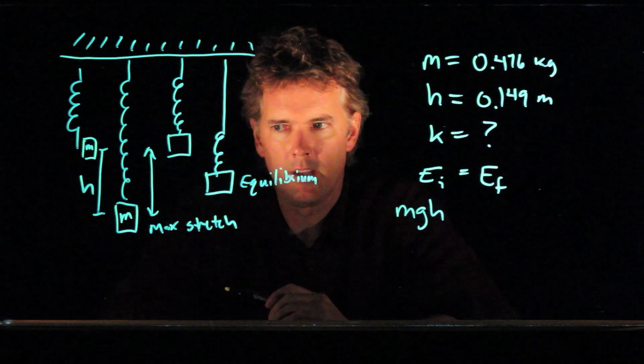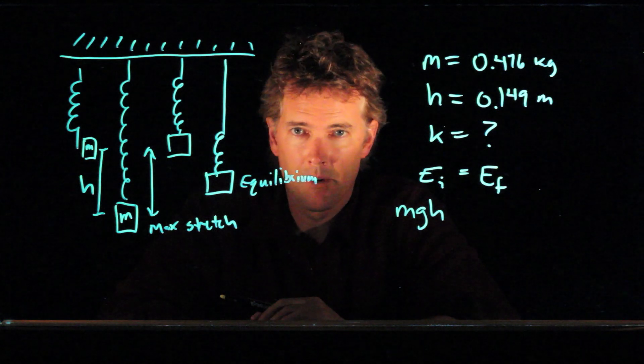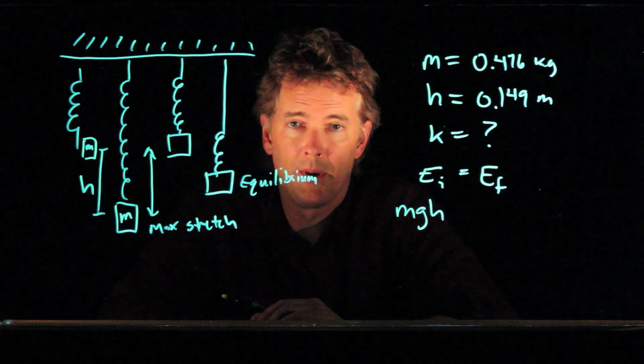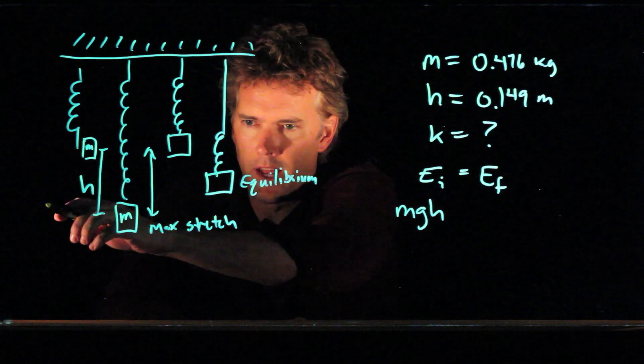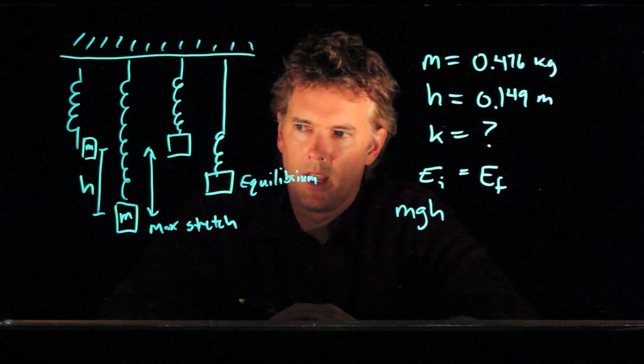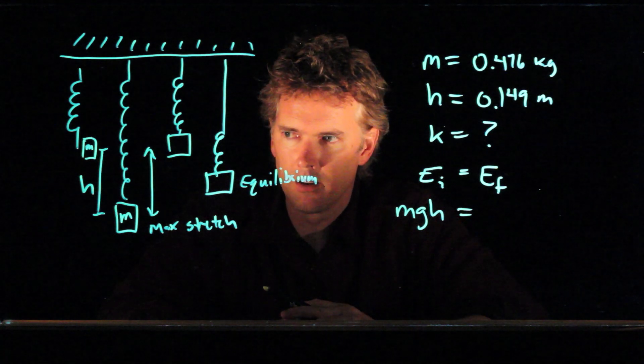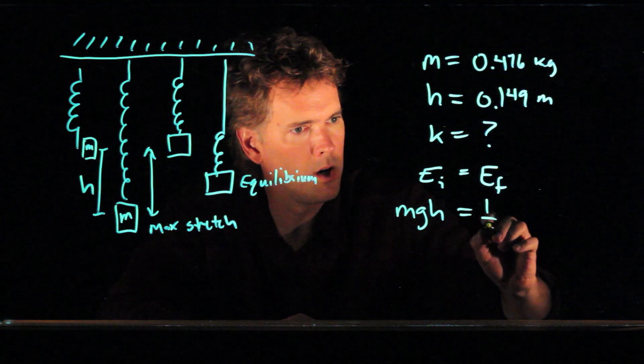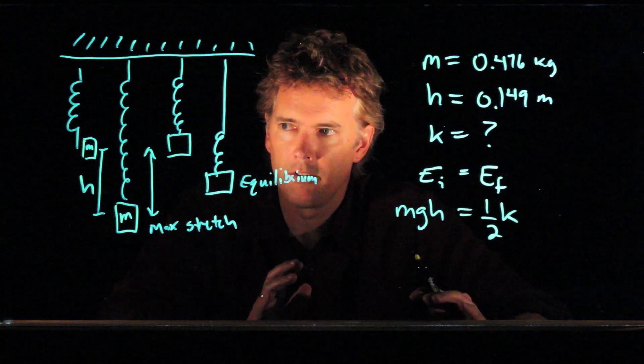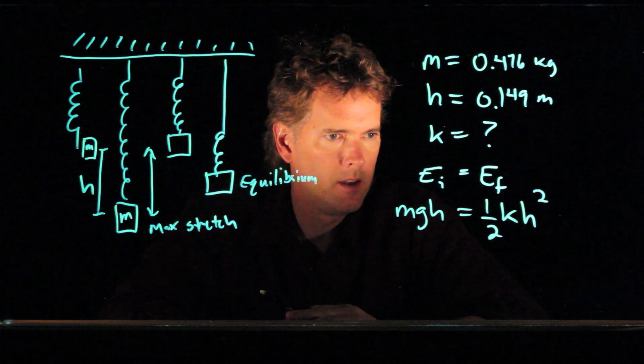Well, at the bottom of its motion, it's got a velocity of 0. So there's no kinetic energy. There is no potential energy anymore if we set our y equals 0 to that distance. And the only energy it has is the stretch of that spring. And so we can say 1/2 k x squared. But how far does it stretch? It stretches a distance h. And now look at this.